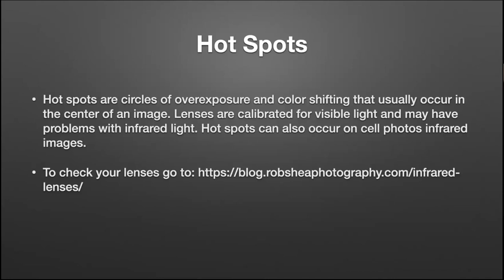Some problems with infrared photography: a lot of lenses — and my cell phone photos also had this problem — is called hotspots. Especially with more modern lenses, the center area can be overexposed from color shifting that results from infrared being bent slightly differently than regular color. To check this out, you don't have to just buy a lens and test it. On Rob Scheer's website he has a list of lenses that do not have hotspots, and my lenses do not.